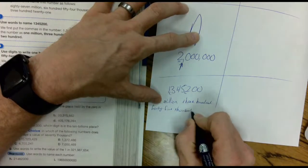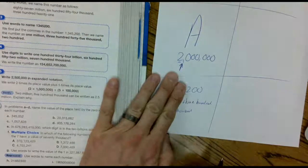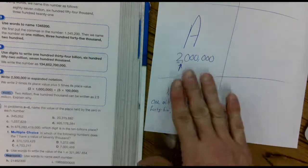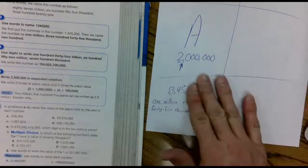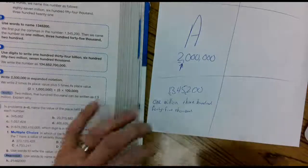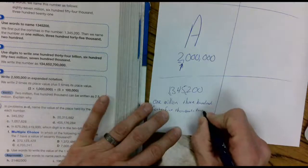And the last chunk. Two hundred. Now kids start looking at this number and say, that's really hard Mr. Barr. No, no. Chunk it. One million, three hundred forty-five thousand, two hundred.